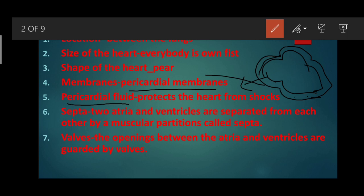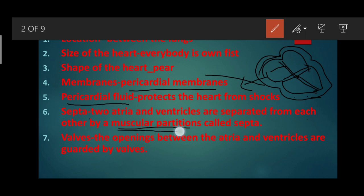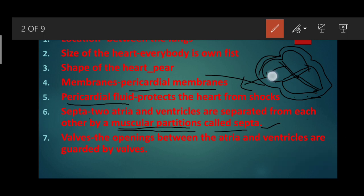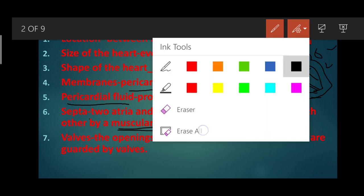The heart is divided into four chambers with the help of muscular partitions. These muscular partitions are called septa. Two atria and ventricles are separated from each other by septa — just like walls separate rooms in a house. Septa help to prevent the mixing of blood, because the right side chambers are filled with deoxygenated blood and the left side chambers are filled with oxygenated blood.